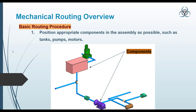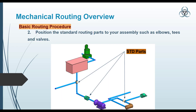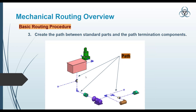Now let's look at the mechanical routing procedure for creating an assembly. The first step is to position the appropriate components in the assembly, such as tanks, pumps, and motors — the common parts that need to be properly positioned. The second step is positioning all the standard routing parts, such as tees, valves, walls, and elbows. All these components should be properly positioned before proceeding.